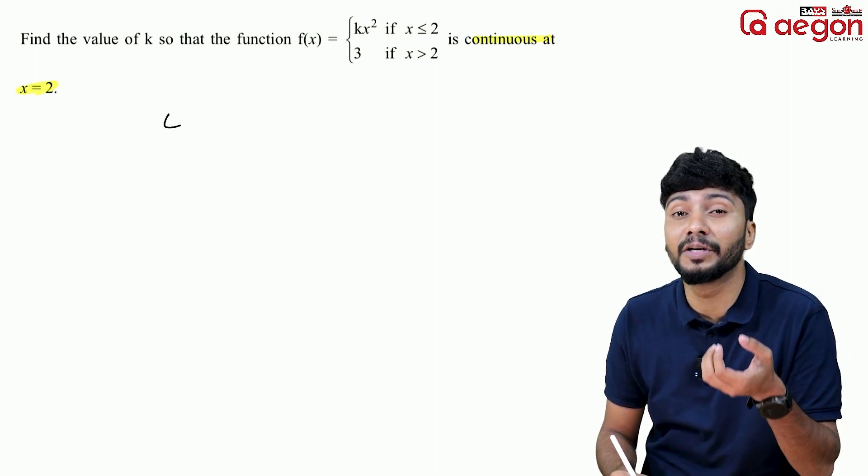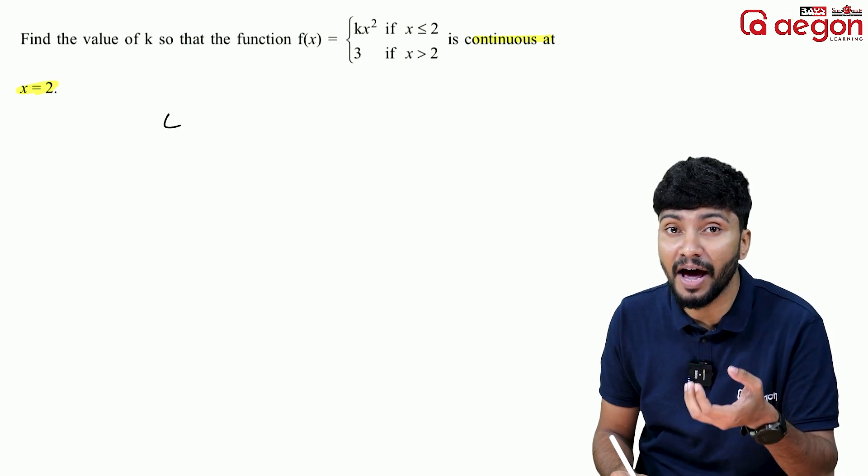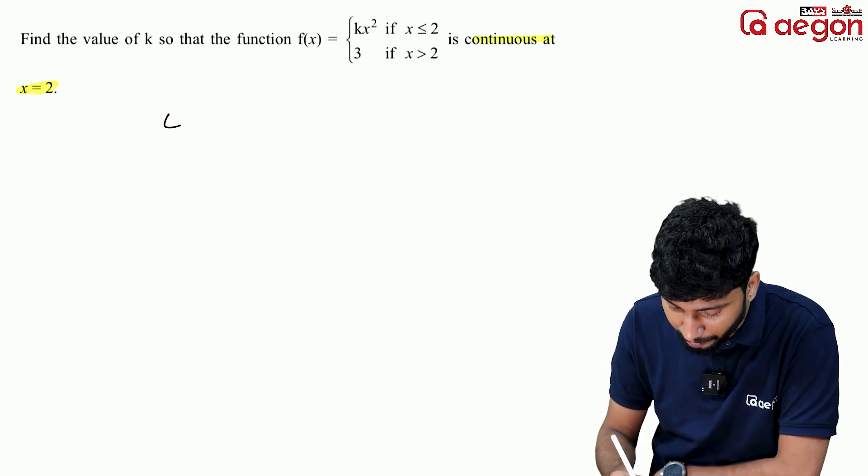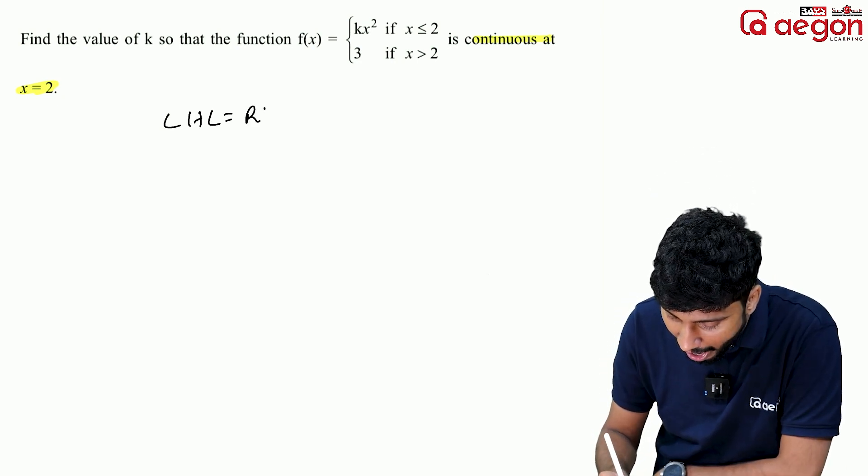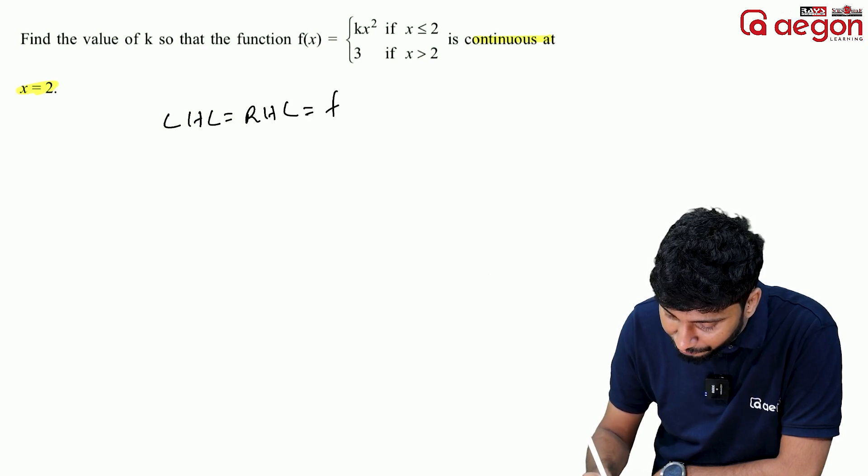For a function to be continuous at a point, the left hand limit equals the right hand limit equals the function value at that point. So LHL equals RHL equals f of 2.